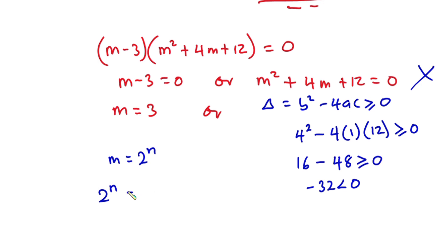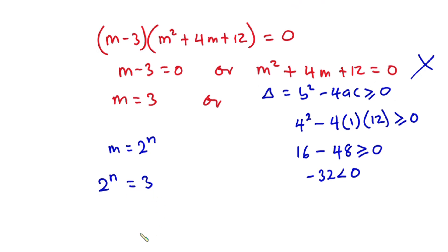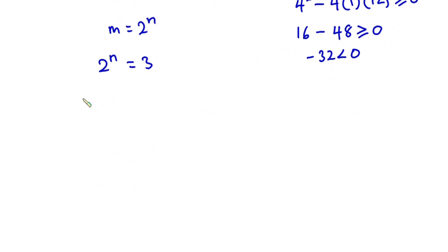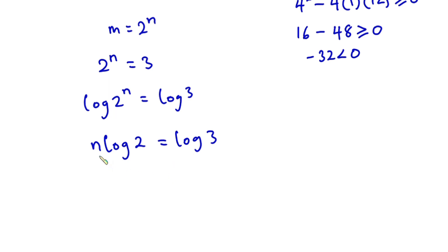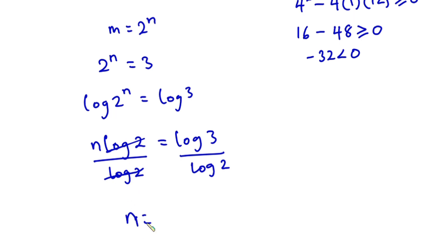Our only solution is m equals 3. Since m equals 2 to the power n, this means 2 to the power n equals 3. Introducing log base 10 on both sides: log of 2 to the power n equals log 3. Using the log power rule, this becomes n times log 2 equals log 3. Dividing both sides by log 2, we get n equals log 3 over log 2.